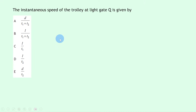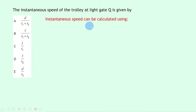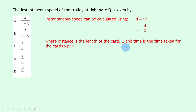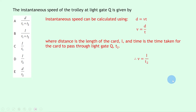Instantaneous speed can be calculated using speed = distance/time, which rearranges to v = d/t. The distance here is the length of the card l, and the time is the time taken for the card to pass through light gate Q, which is t2. So we replace those symbols with the specific variables given: v = l/t2, where l is the distance and t2 is the time at light gate Q. The answer is D, l over t2.